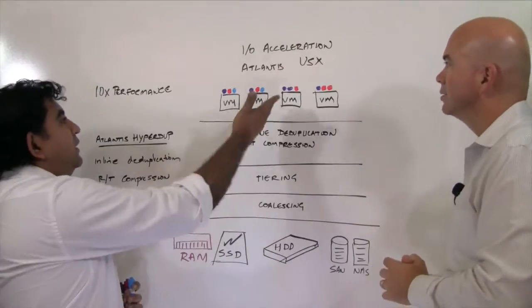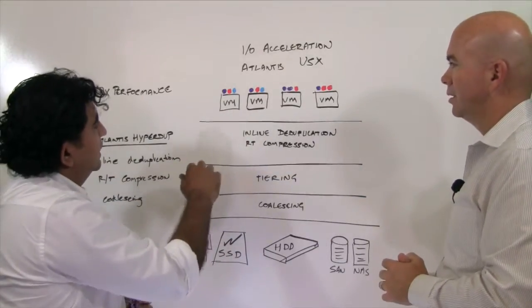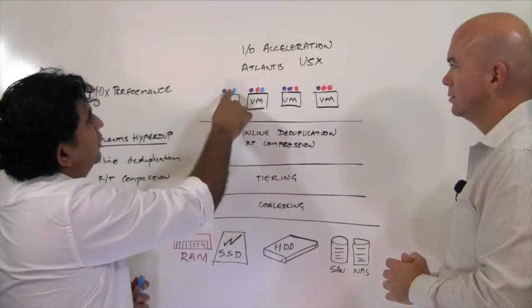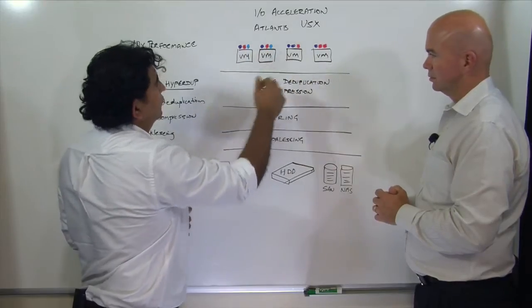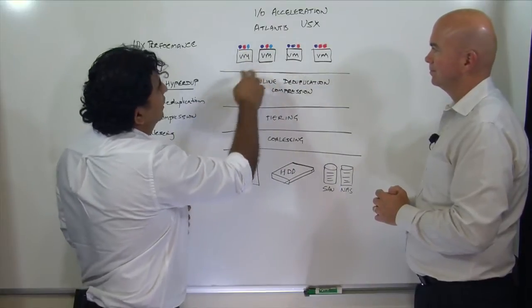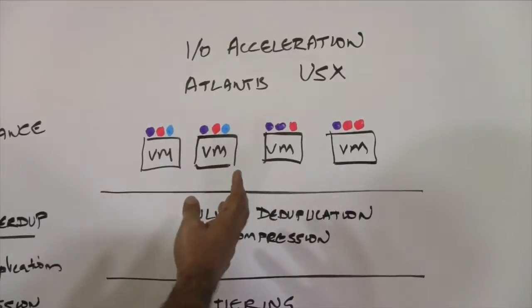We understand a bunch of things. For example, if you look at this schematic over here, what I've got is a bunch of VMs and we're showing you the composite blocks of those VMs. And as you can see from the colors, the VMs share a lot of common blocks.